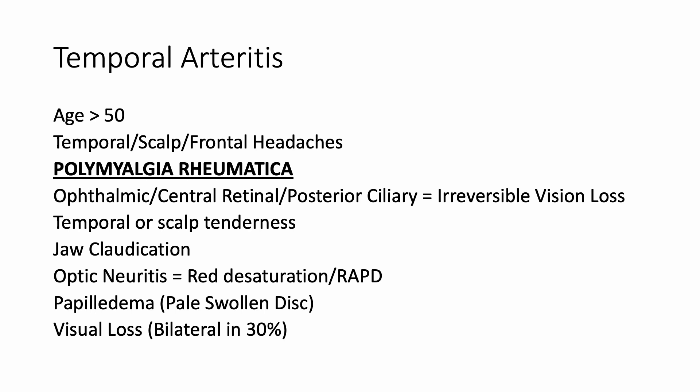Optic neuritis signs overlap with giant cell arteritis. However, optic neuritis is commonly associated with multiple sclerosis, which is a disease of the young, whereas giant cell arteritis is a disease of the old. The key differentiating factor is that optic neuritis in MS presents with painful eye movements, whereas here the eye movements were not painful. In optic neuritis you see red desaturation — the normal eye appreciates red colour but the abnormal eye sees faded red. There can also be a relative afferent pupillary defect, papilledema with a pale and swollen disc, and visual loss, which can be bilateral in about 30% of patients. So temporal arteritis — giant cell arteritis — is essentially optic neuritis without pain.